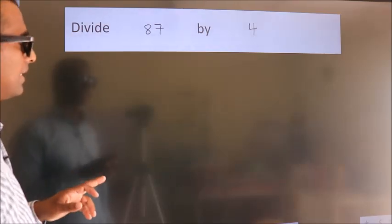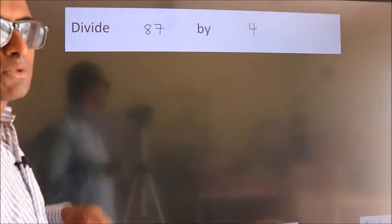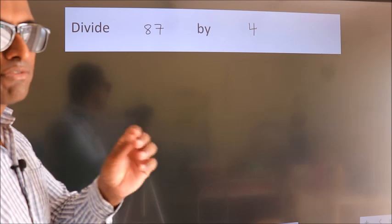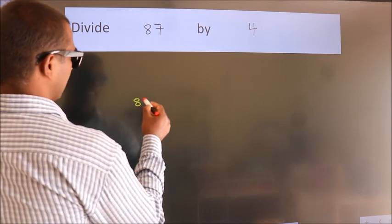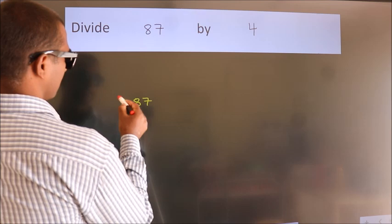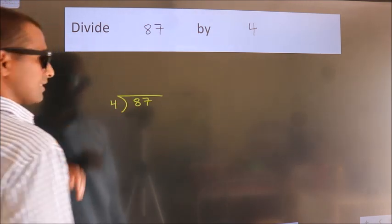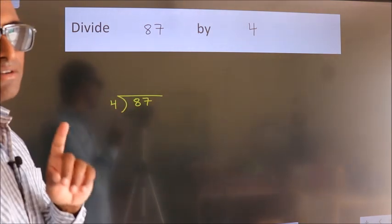Divide 87 by 4. To do this division, we should frame it in this way. 87 here, 4 here. This is your step 1.